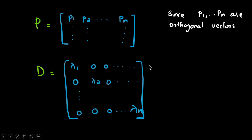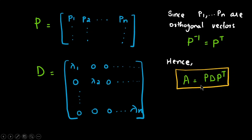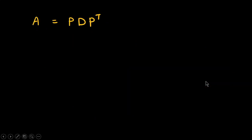Since P1 through Pn are orthogonal vectors, we can write P inverse equal to P transpose. That is the property of an orthogonal matrix. So we can write A equal to P times D times P transpose, avoiding the inverse calculation — we simply take the transpose and then do the multiplication. Here P is the matrix of eigenvectors and D is the diagonal matrix of eigenvalues.